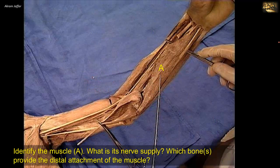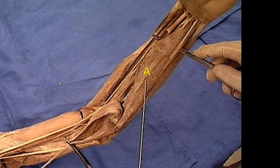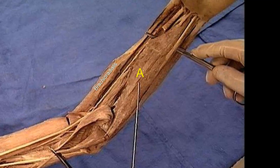Identify the muscle A. What is its nerve supply? Which bones provide the distal attachment of the muscle? This is a dissection of the flexor compartment of the forearm. On the most lateral side we can see brachioradialis. More medially, the muscles of the flexor group of the forearm. Note the pronator teres that forms the medial boundary of the cubital fossa.